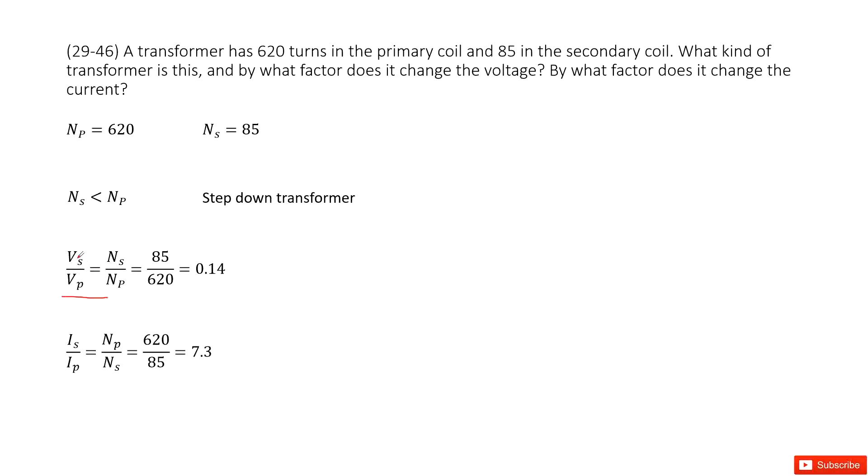So Vs is the output voltage and Vp is the input voltage. That means the output voltage is smaller than the input voltage. This is a step-down transformer.